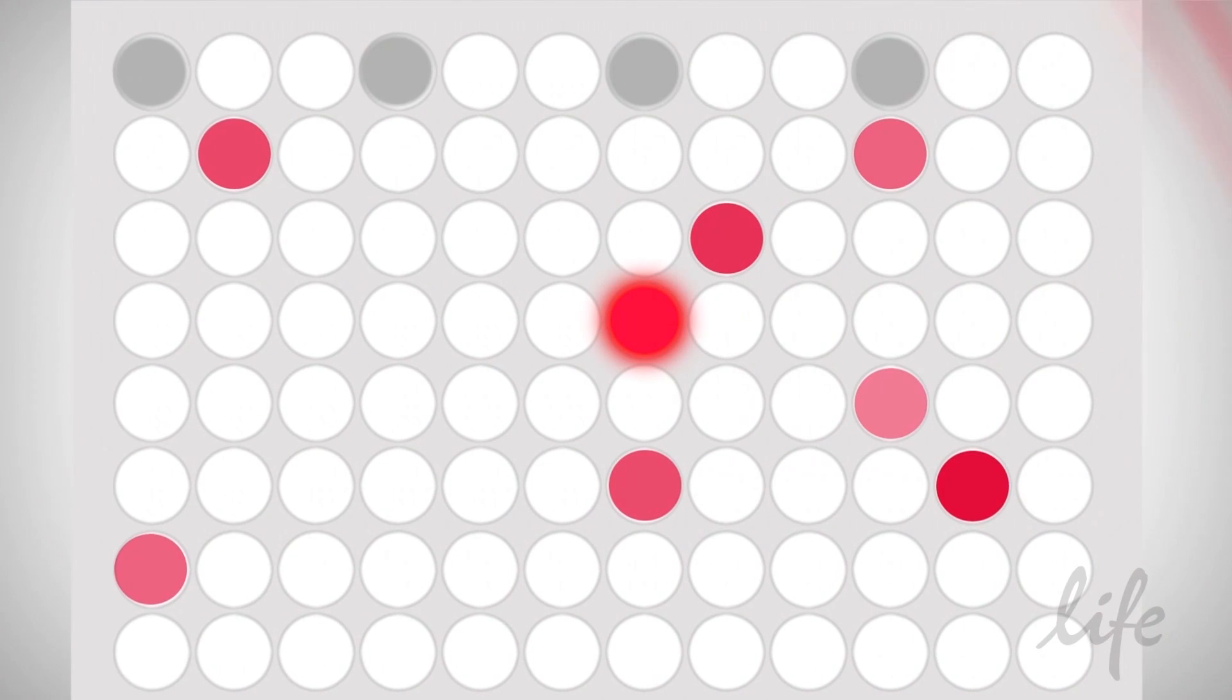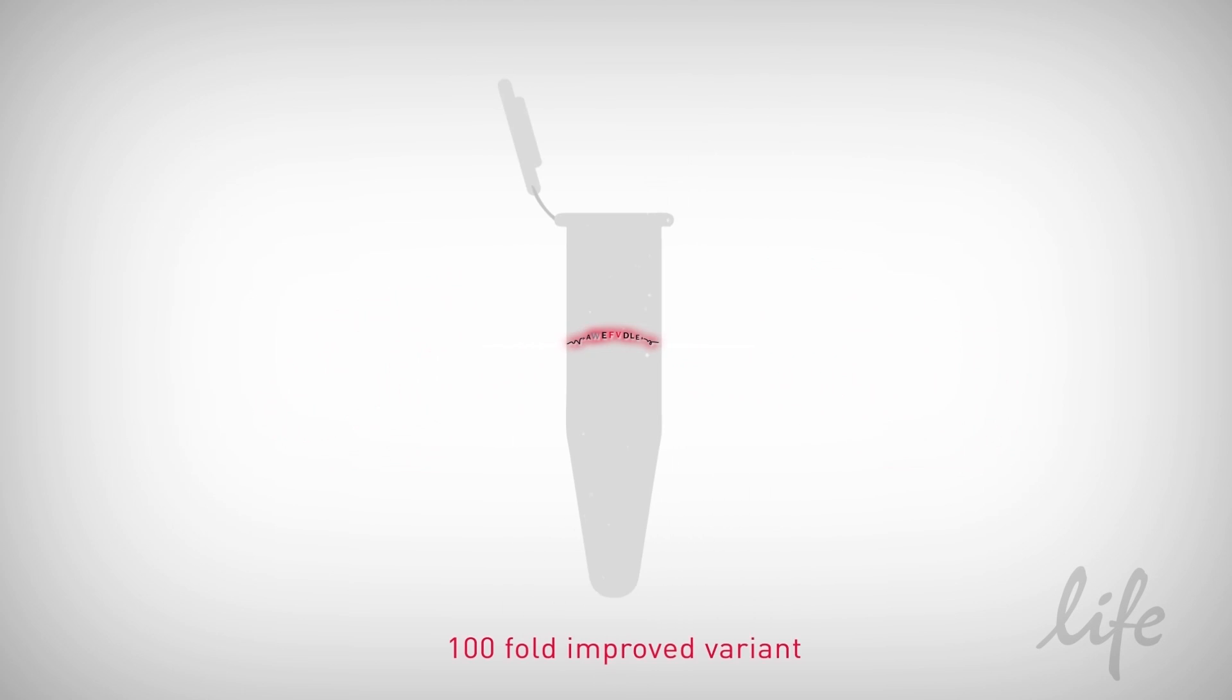TRIM technology deploys the incorporation of pre-made trinucleotide building blocks and allows inclusion of only those substitutions that previously showed beneficial effects.